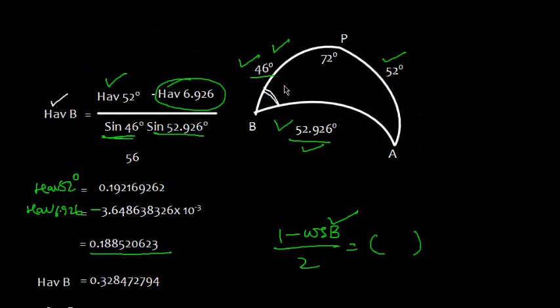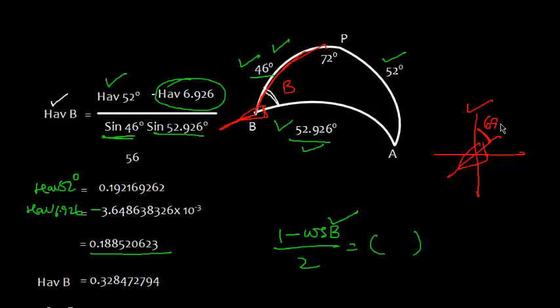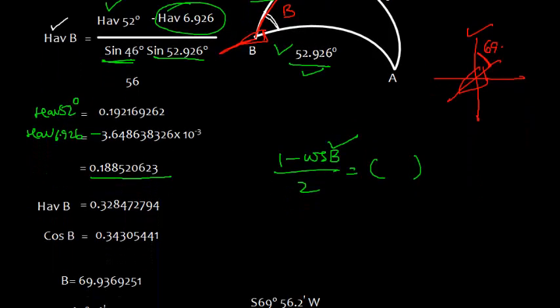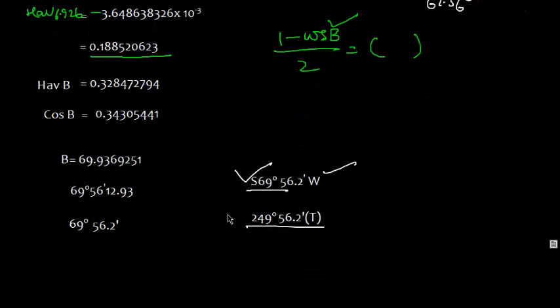Now which angle have we obtained? The angle obtained is this angle. The vessel is like this, so you can write here this is meridian. And the angle obtained is this angle, which is 69 degrees 56.2. Similarly, this angle will be same, this is also 69 degrees 56.2. And we can write this as south 69 degrees 56.2 west.